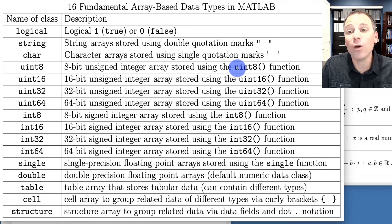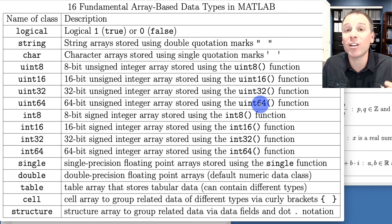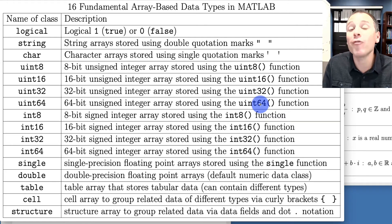In this lesson, we're going to see how to use the uint8, uint16, uint32, and uint64 functions to convert variables that are stored using the double data class into variables that are stored using an unsigned integer data class. We'll also talk about memory requirements and many other features of unsigned integer data that we can take advantage of in MATLAB.